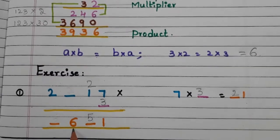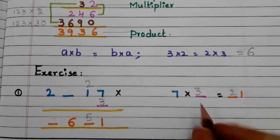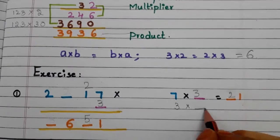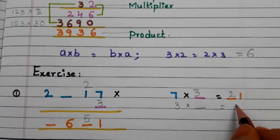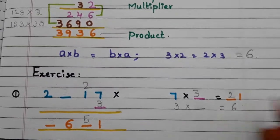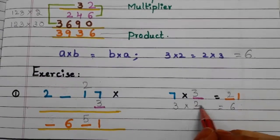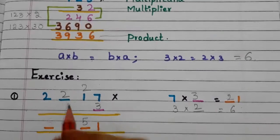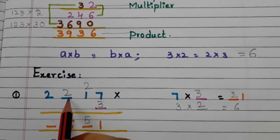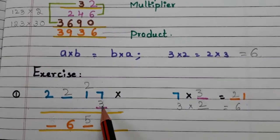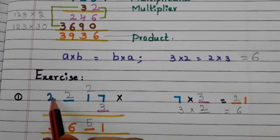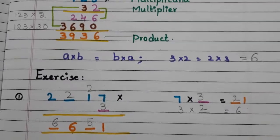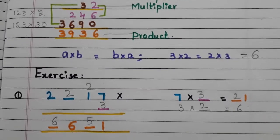Here we have to find the next digit. 6 is already there in the result, so 3 times what number equals 6? 3 twos are 6, so the digit here is 2.